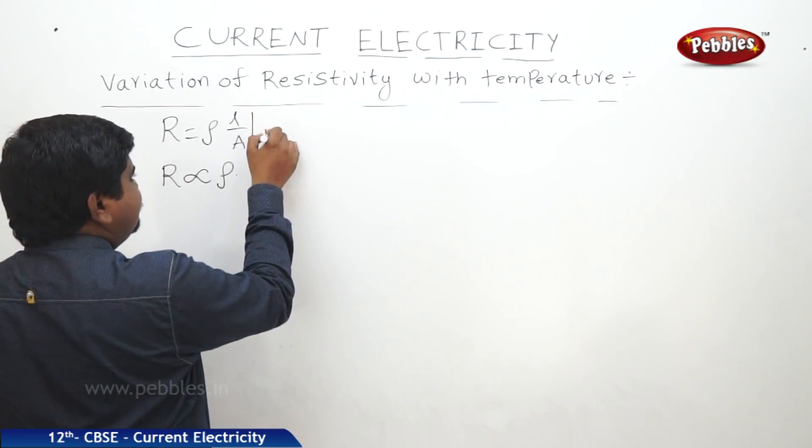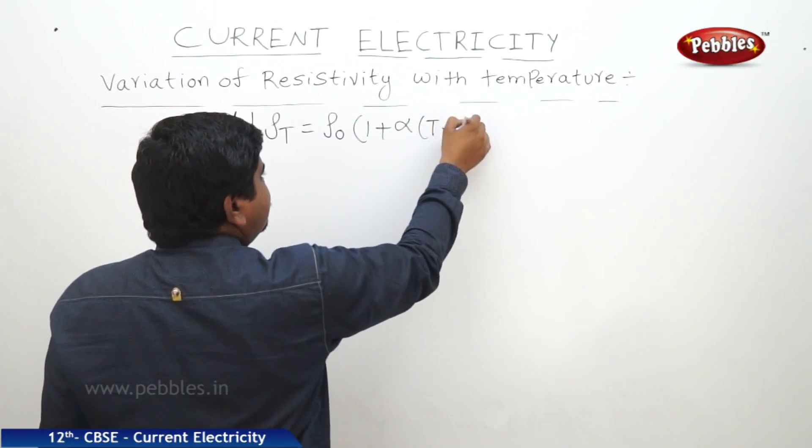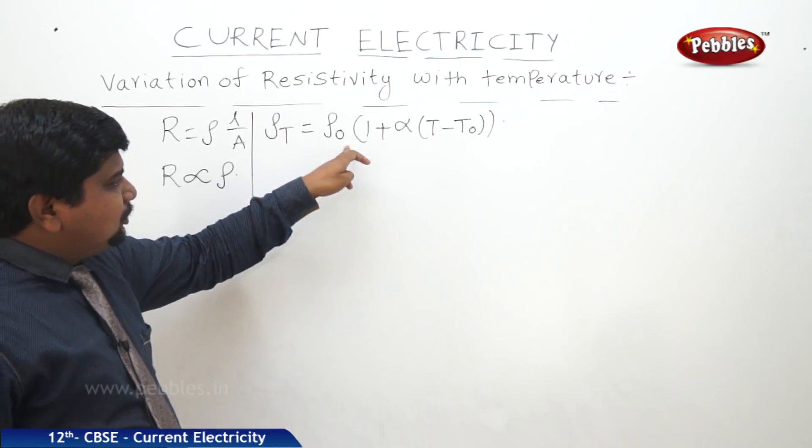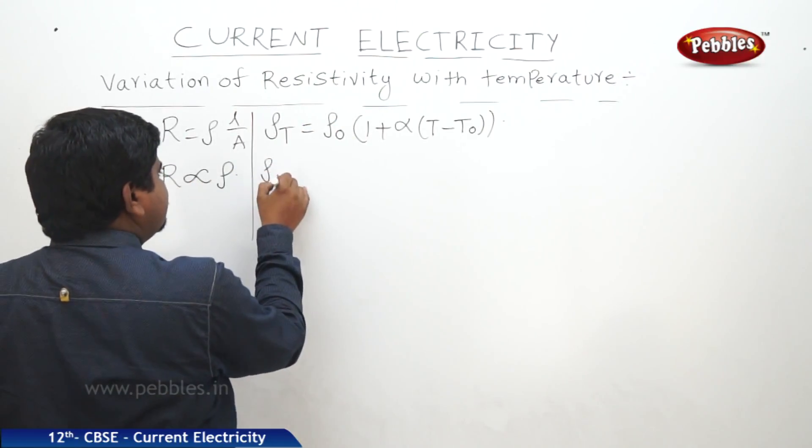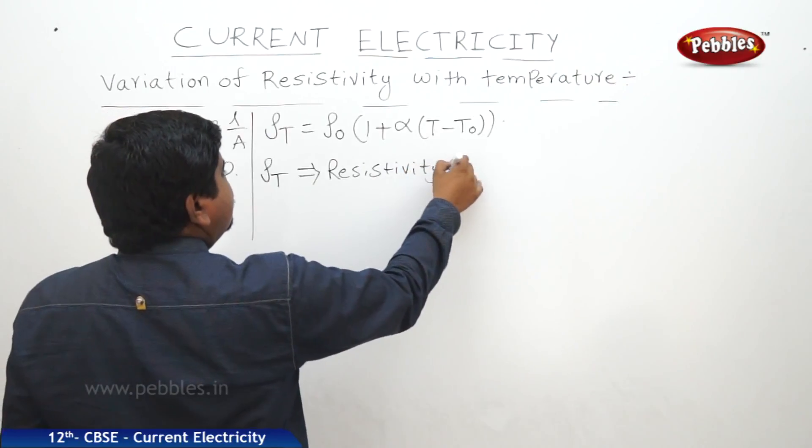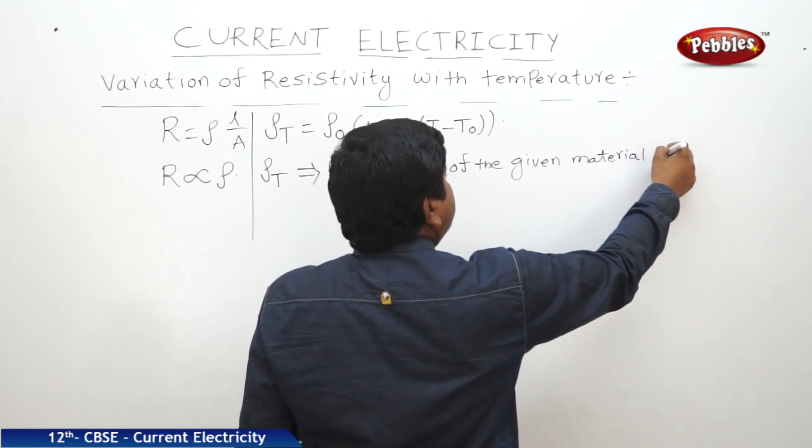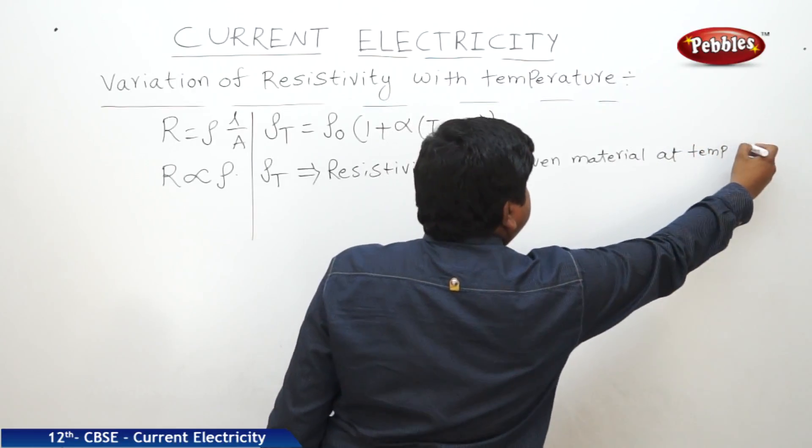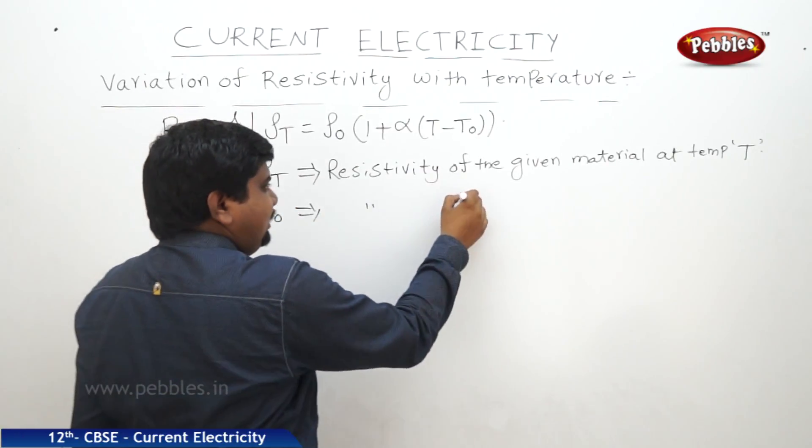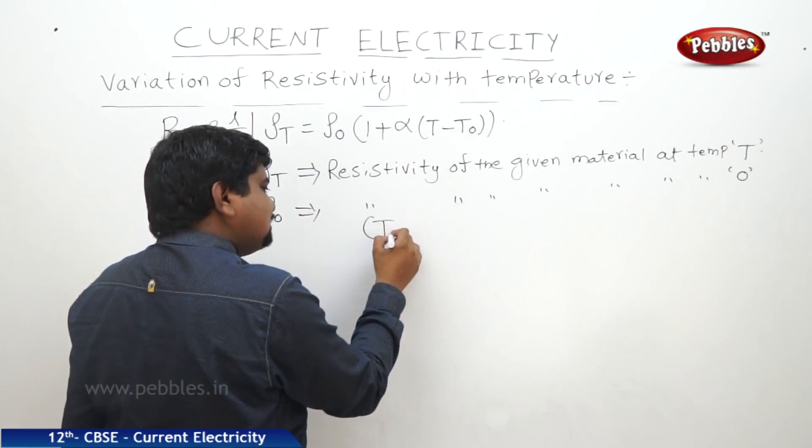Therefore, the expression for ρT is equal to ρ0(1 + α(T - T0)). Same terms: in place of RT I wrote ρT, in place of R0 we wrote ρ0. ρT is resistivity of the given material at temperature T. ρ0 is resistivity of the given material at temperature T0, where T0 is equal to 0 degrees Celsius or room temperature.